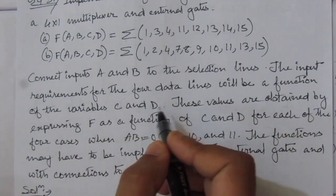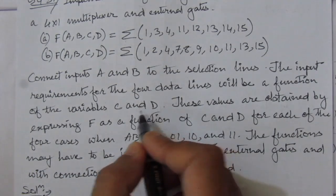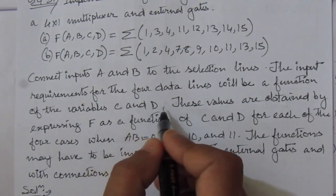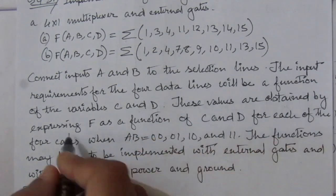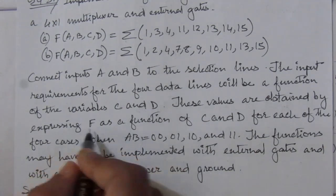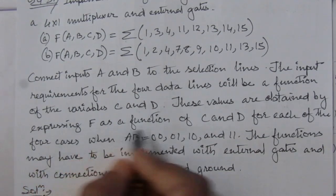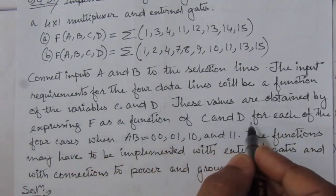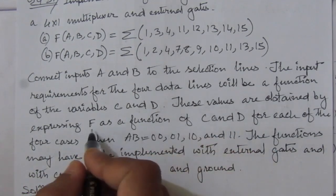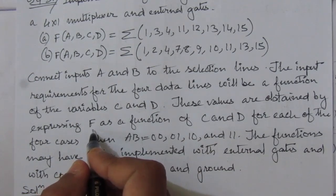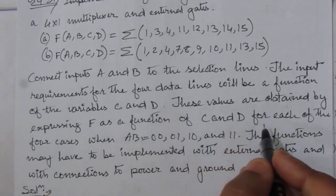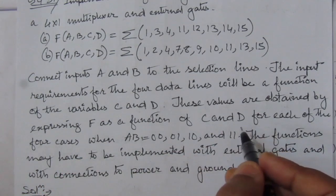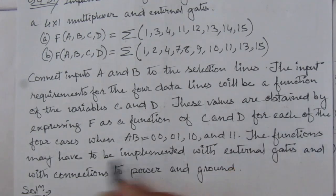The input ports will have a function of C and D connected. These values are obtained by comparing F — that is, comparing the output as a function of C and D. We have to compare the output function with C and D inputs and express the output function F in terms of C and D.